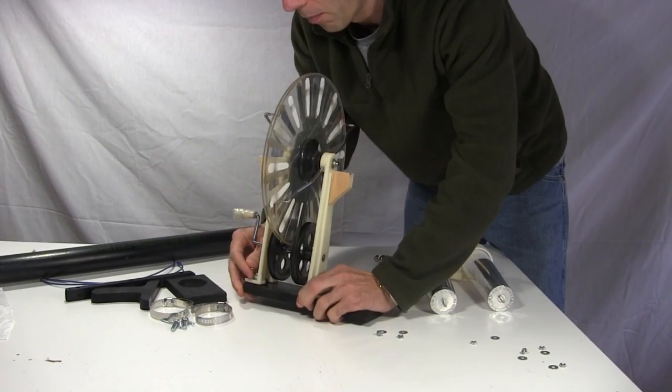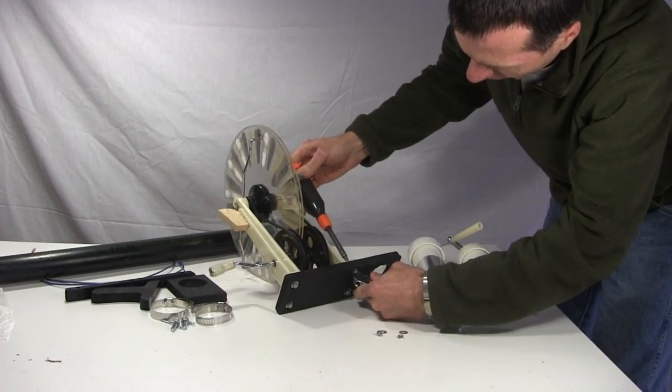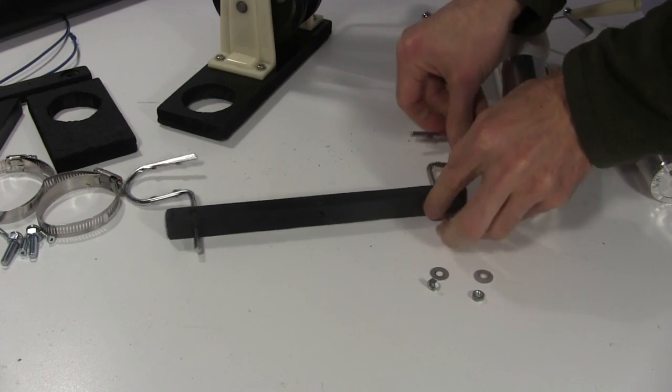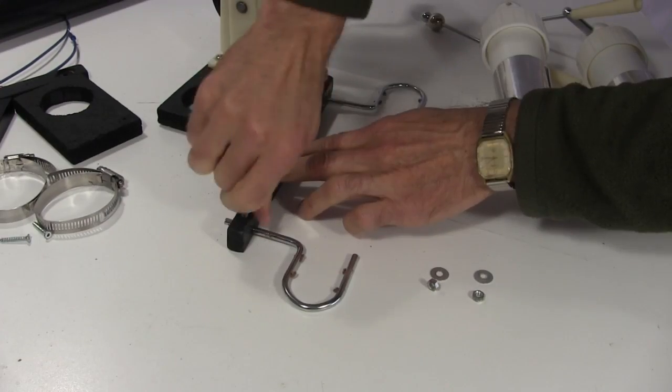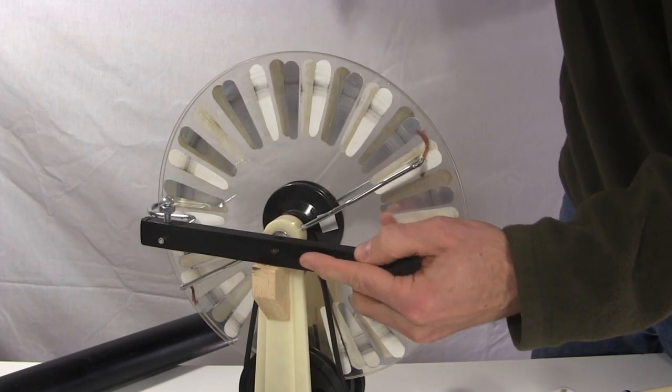I started with the base for the disc assembly, then attached the collectors to a cross piece, followed by attaching that to the disc assembly.